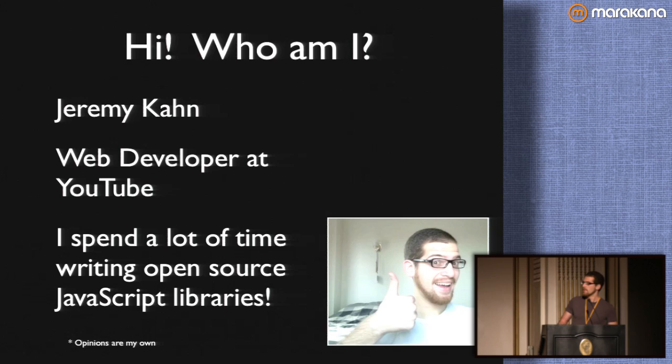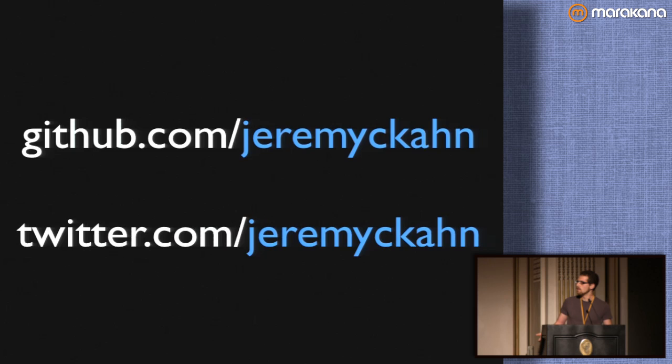First off, who am I and why are you listening to me? My name is Jeremy Khan. I'm a web developer at YouTube, and I love writing open source JavaScript libraries. I've written a few for fun in my free time — it's a really good learning exercise and I've made some cool things with it. If you want to find me online, I'm Jeremy C. Khan on both GitHub and Twitter.